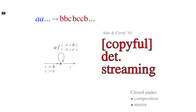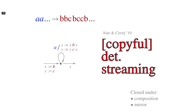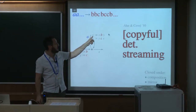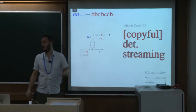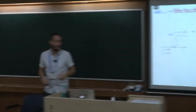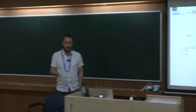Streaming string transducers were introduced by Alur and Černý. Instead of appending strings in the output directly, you have a finite number of register buffers that you load with letters. You can increase their size with update instructions — for example, during a transition, X takes the content of X, followed by B, followed by the content of Y. These are simultaneous assignments.